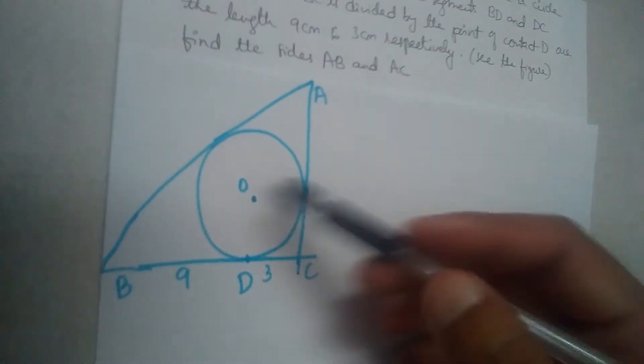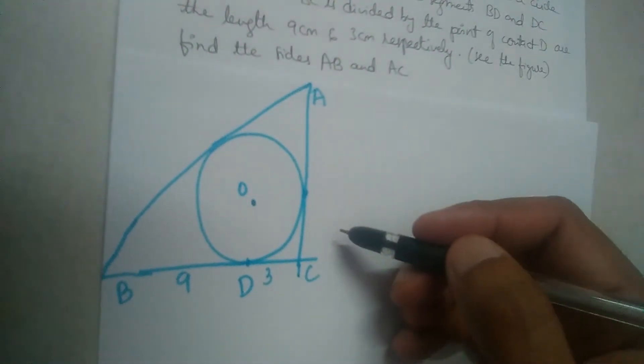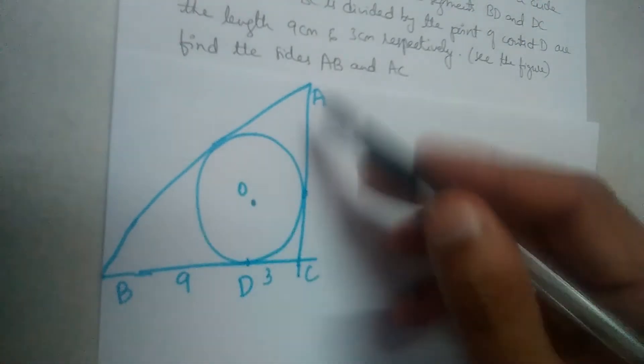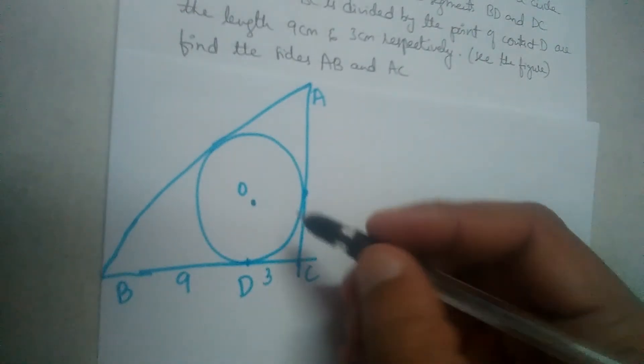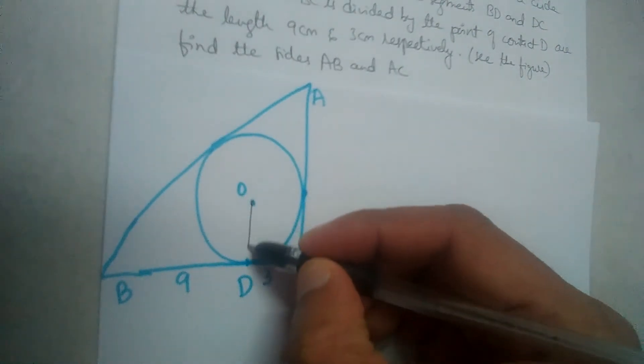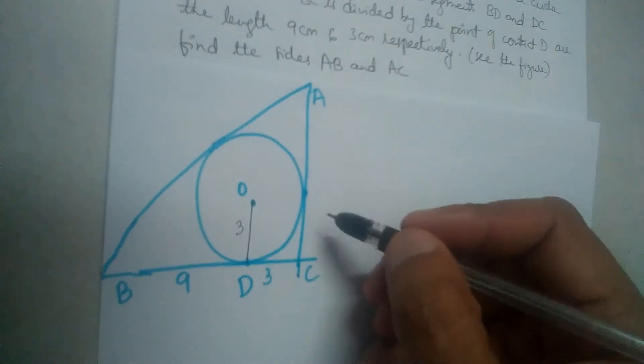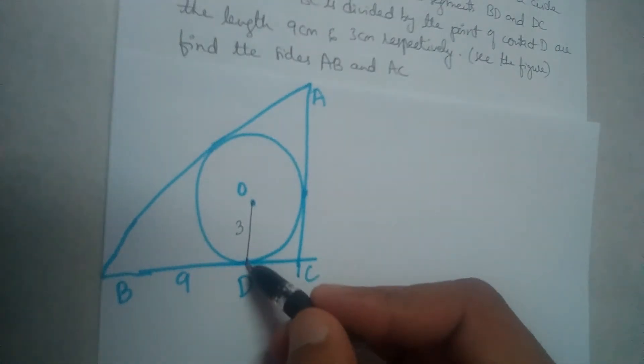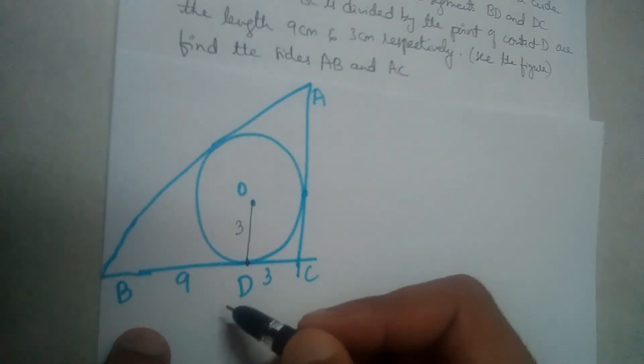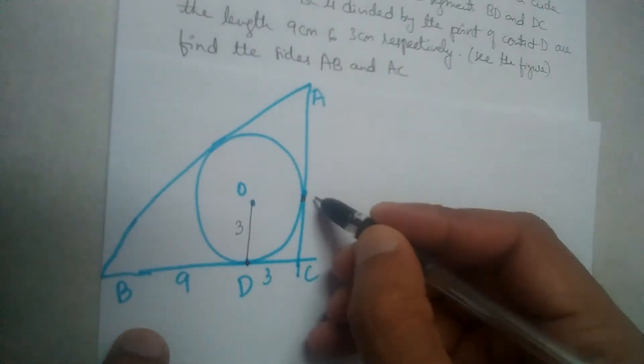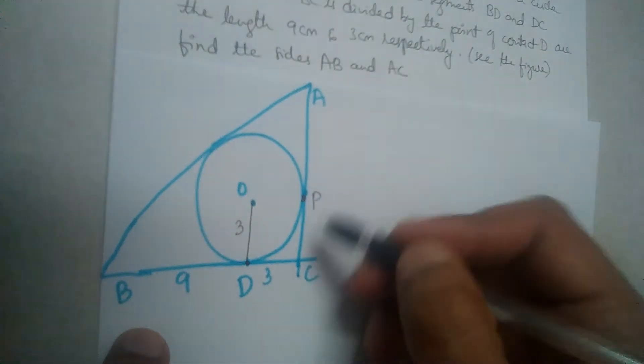There is a triangle, and inside the triangle we have a circle of radius 3 centimeters. Let us join OD - it will be 3 centimeters. DC is 3, given, and BD is 9 centimeters, given. Let P be a point of contact here.